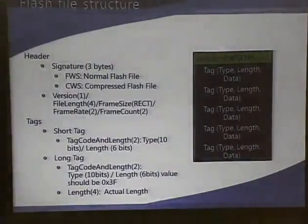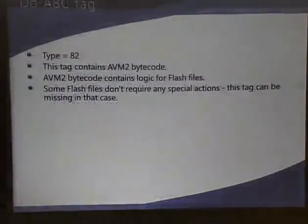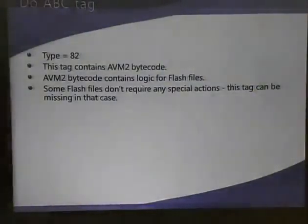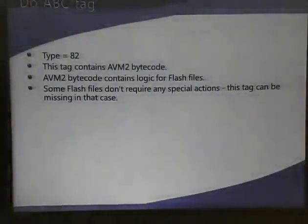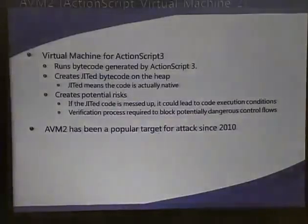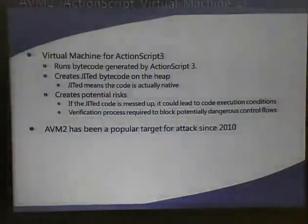From all the formats, one of the tag types is number 82, and this tag contains AVM2 bytecode. Not all Flash files contain this tag, but some Flash files that have actions and have been compiled with ActionScript will have this tag. There are multiple versions of ActionScript, and the latest one is ActionScript 3. AVM2 is the virtual machine that runs ActionScript 3 bytecode.